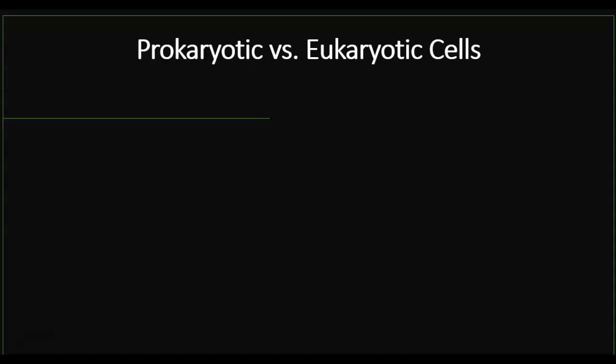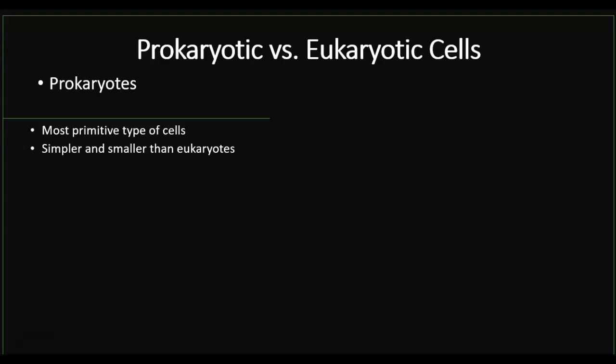First let's talk about the difference between prokaryotic and eukaryotic cells. Cells in general can be divided into two broad categories: prokaryotic or eukaryotic. Prokaryotes are believed to be the most primitive types of cells — it is believed they were around much longer than eukaryotic cells. They're going to be much simpler and smaller. When you're trying to find them under the microscope, eukaryotic cells are going to be much easier to find. Prokaryotes are a little bit more difficult to find and require higher magnification.